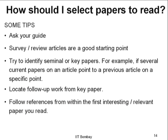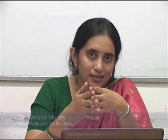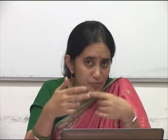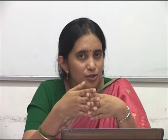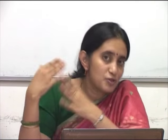Sometimes survey articles do not exist for the topic you are looking for, and your guide might ask you to write one yourself. Every field has certain key papers or seminal papers — our job is to identify them. Once we have identified two, three, or five key papers in a field, those we must read repeatedly. One way to identify key papers: a lot of other papers would be referring to that one paper. If you see a name of a paper or a particular author being mentioned several times in many different papers, you can assume it is a key paper in the field.